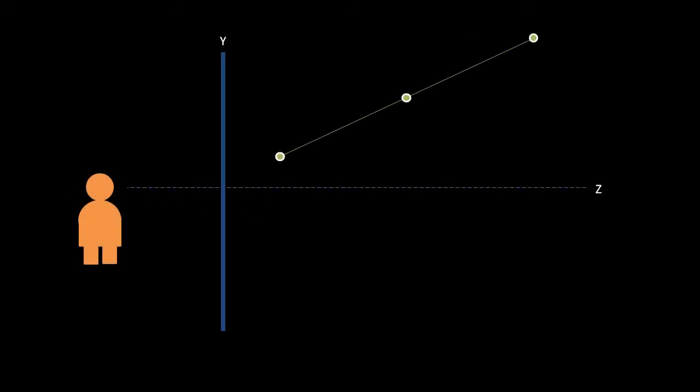To understand how to account for perspective, consider again what a rectilinear projection does. Here we have a 3D line viewed side on. When we account for perspective, we scale the points closer to the axis, and the scaling effect increases as we move away from the camera. Because the scaling increases exponentially, the perspective-adjusted points no longer line up, instead forming a curve.